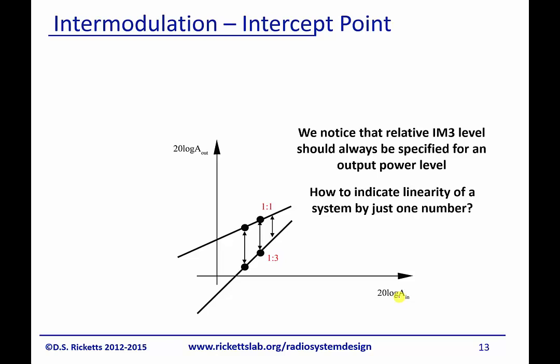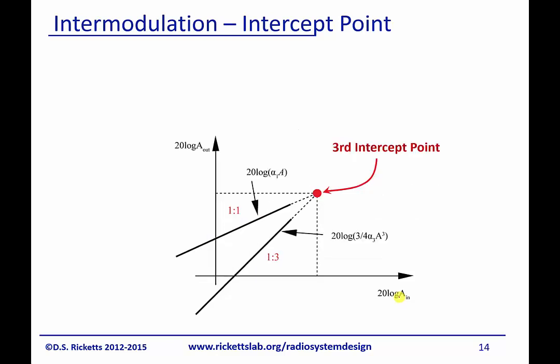And so when we want to specify the IM3 level, we always need to specify it at a specific output power level. And as I showed you before, and we've gotten to this several times, we describe the intersection of these as the third intercept point. And it happens because these two intersect here. And I just want to emphasize, once again, we're calculating it from a power that's much lower than anything near the distortion. So we're ignoring any of the actual distortion. In fact, this intercept point could be higher than your 1 db compression point.